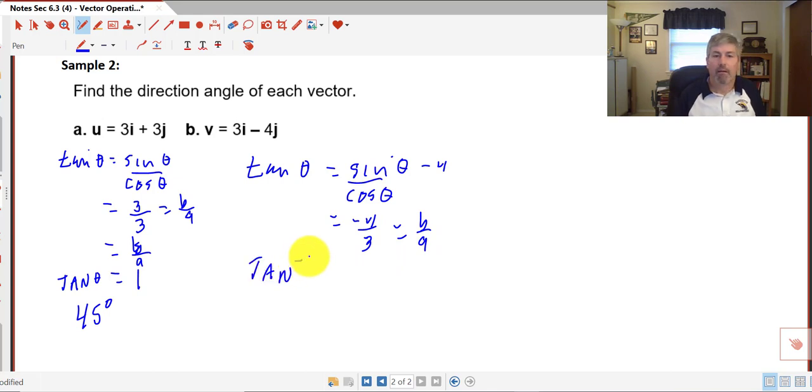So our tangent is negative 4 thirds. So the arc tangent of negative 4 thirds equals theta. We need to take the absolute value of that. That is equal to the absolute value of negative 53.13 degrees. How did I get that? I used my calculator for that. And I had it in degree mode. And I get 53.13.